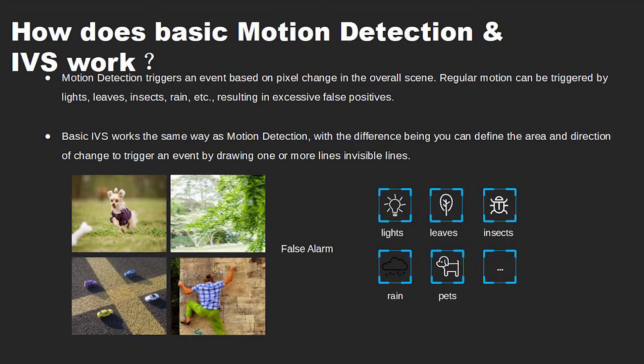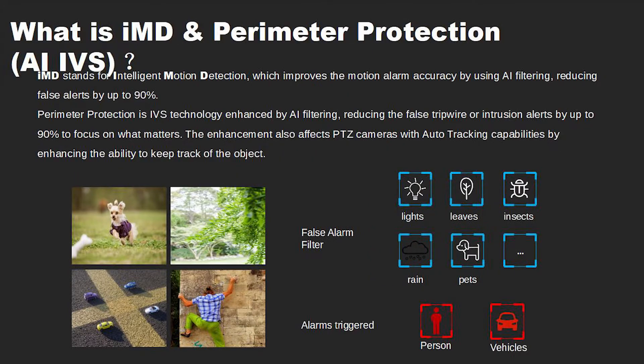Basic IVS works the same way as motion detection, with the difference being you can define the area and direction of change to trigger an event by drawing one or more lines in visible lines.